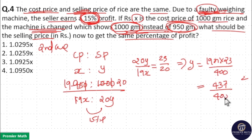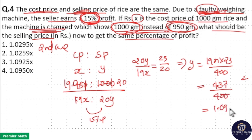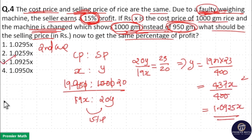437 by 400 is equal to 4.37 by 4. 4 goes 1 time in 4, 0 times in 3, 9 times in 36, 0.25 times in 1. So Y equals 1.0925X. Option 3 is your answer.